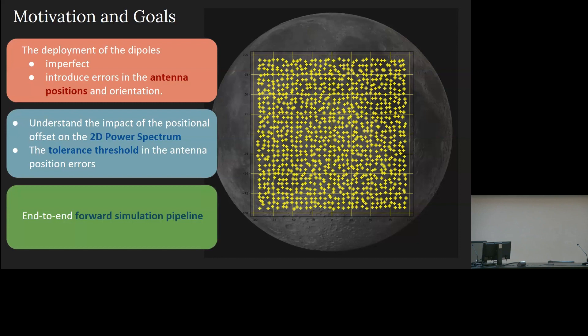Now, for this, intuitively, it is helpful for us to have a simulation where we can put the non-idealities that we know will be there, along with the array layout, and then try to analyze how it affects the recovery of the signal. And so, for this, it is very essential to have an end-to-end forward simulation pipeline, and that is what I am trying to do here.